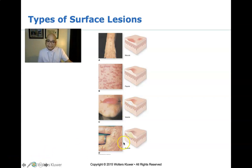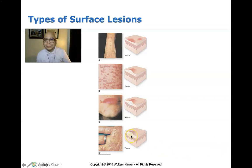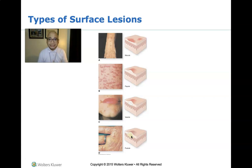The last term is a pustule — a small blister or pimple on the skin that contains pus. That is why you will see a yellow discoloration. Pus is made up of dead leukocytes or dead WBCs in response to a local inflammatory process.